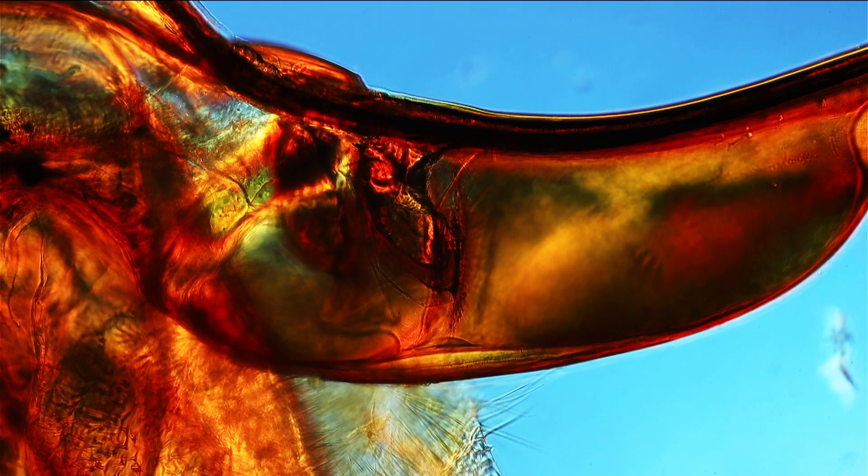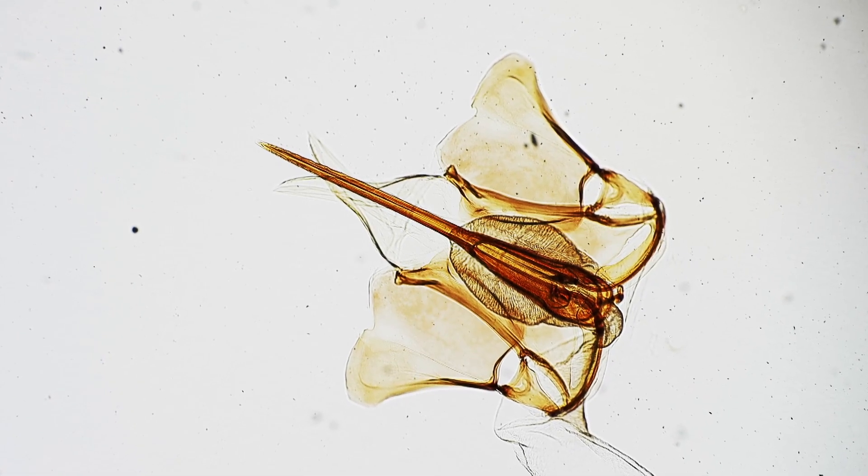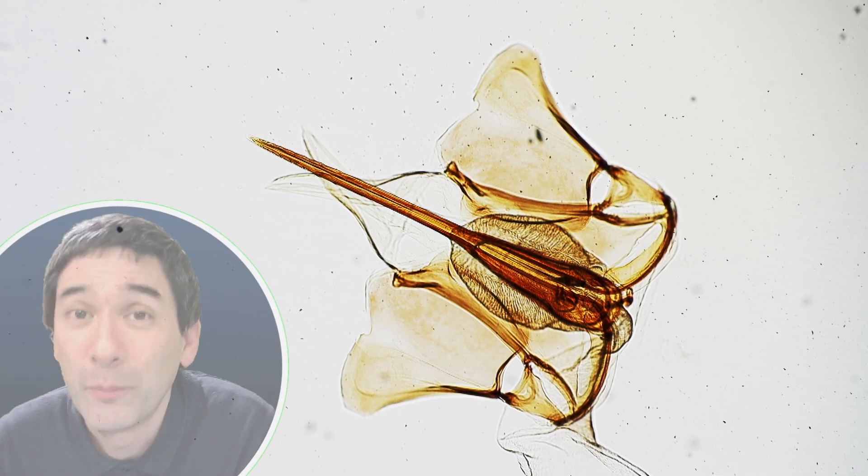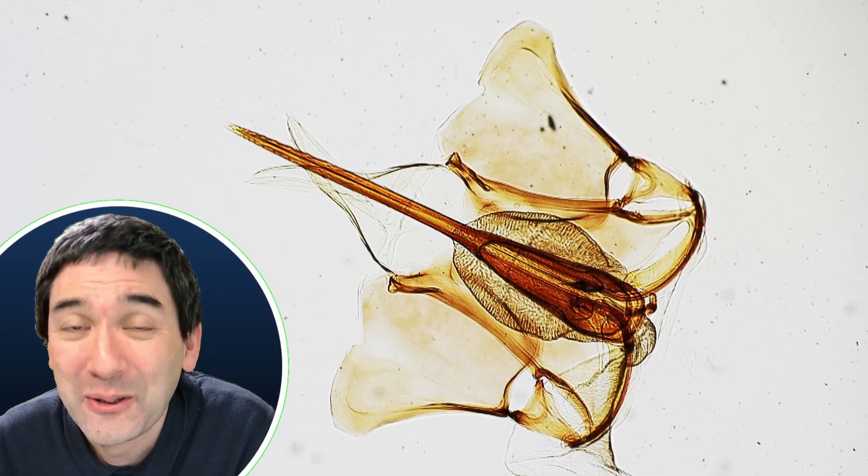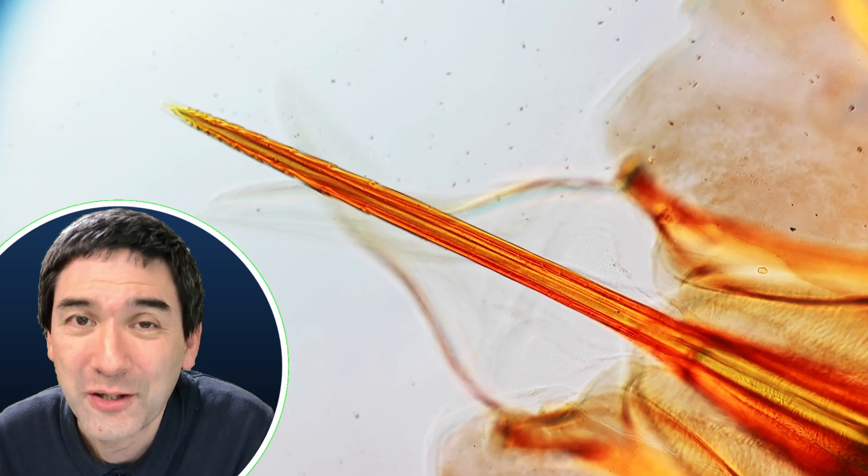In contrast, when we put the sting of a bee under the microscope—and this here was a commercial slide of a bee; I would not want to kill a bee because they're protected—we are able to see that the sting has those tiny little hooks on it.